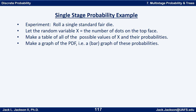So let's take a very simple experiment here. Let's start with rolling a single standard fair die, and let the random variable x be the number of dots on the top face. What I'd like you to do is start by making a table of all the possible values that x can take on and then their probabilities — in other words, a PDF table. Then make a graph of the PDF, which is a bar graph of those probabilities. I don't think this is a very hard exercise for you to do. Why don't you go ahead and do that right now? Press pause.